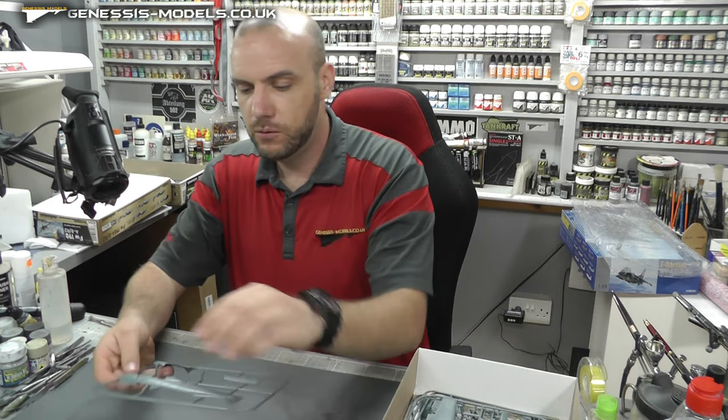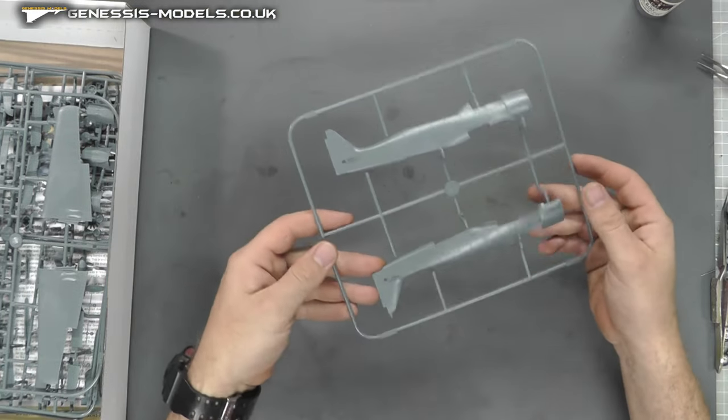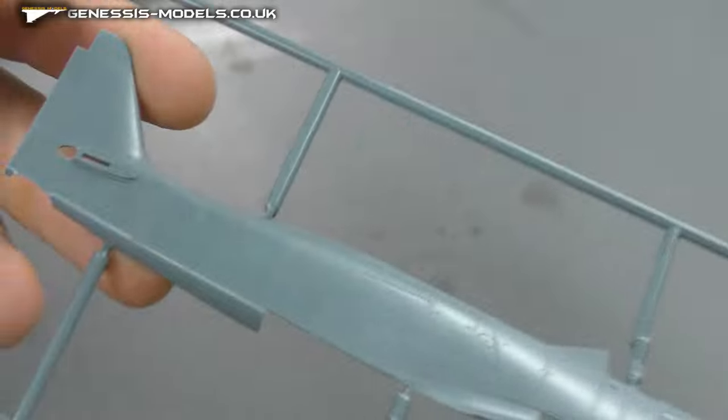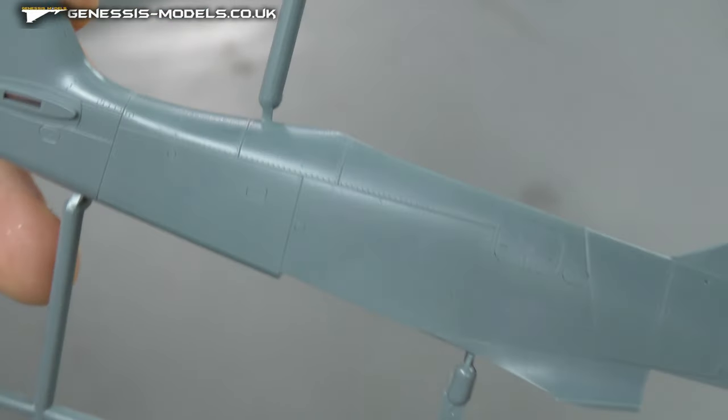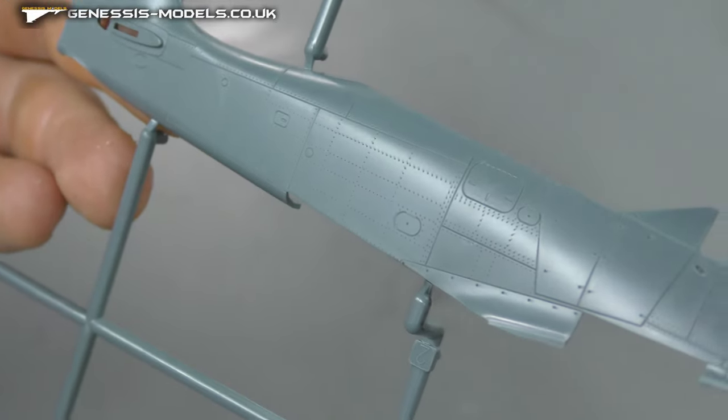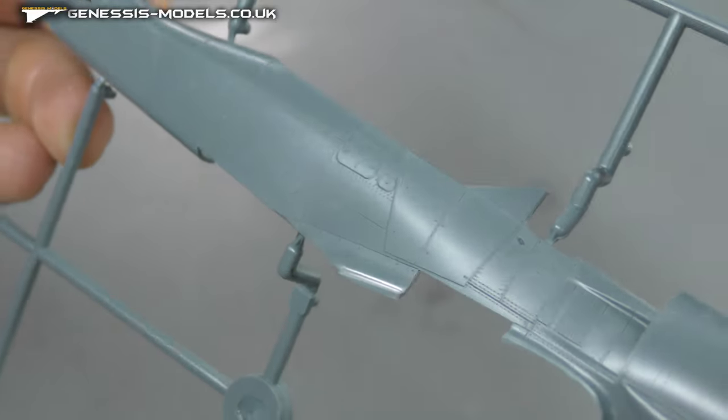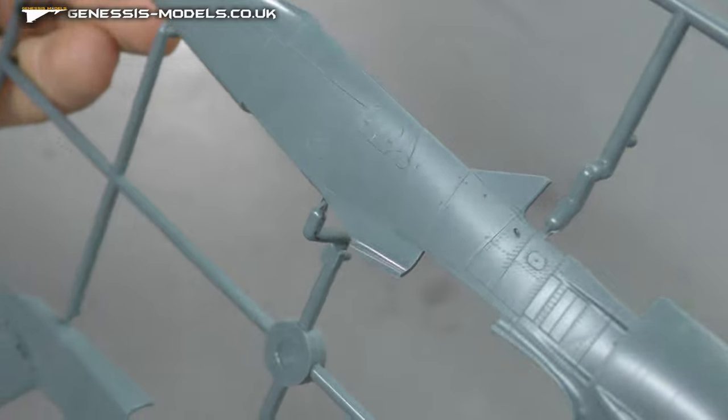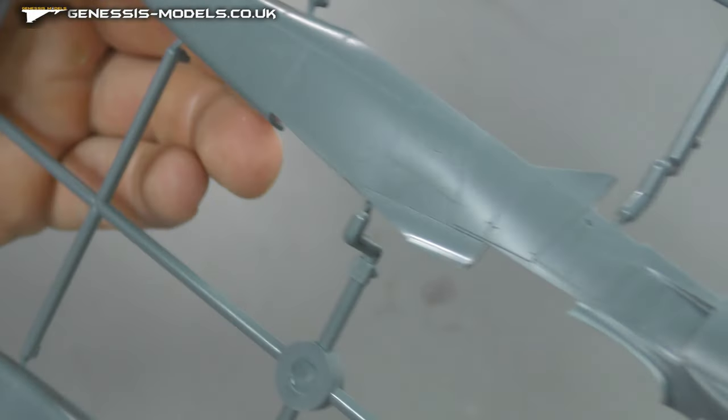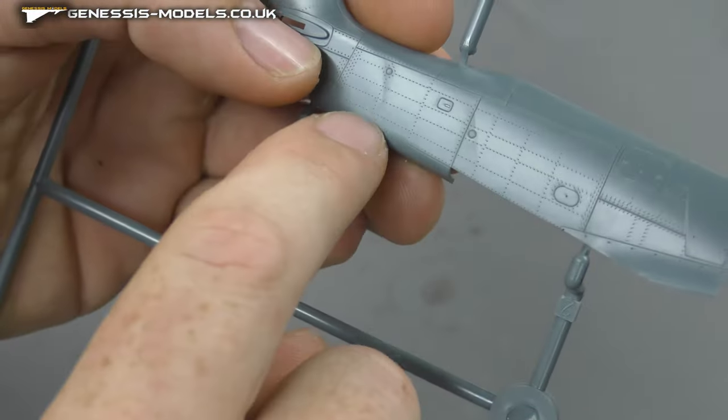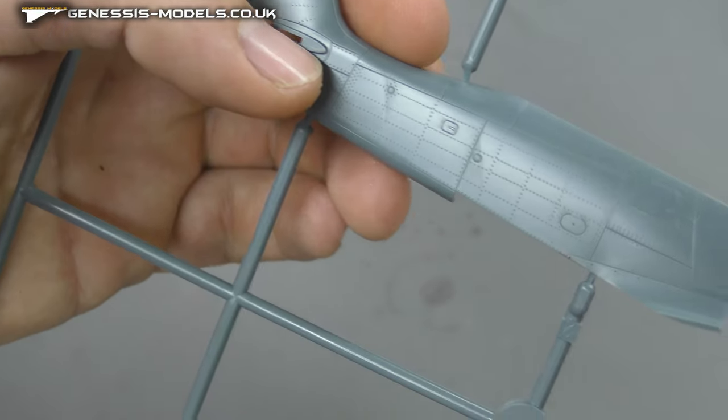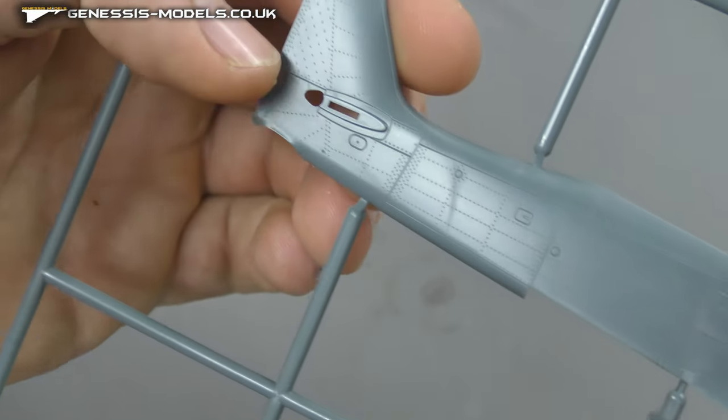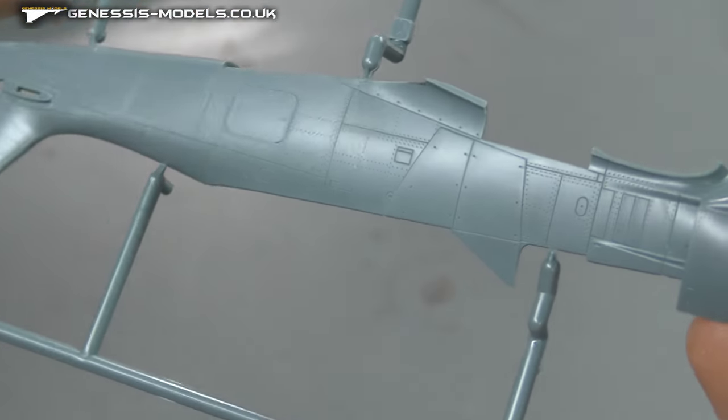Moving along to the fuselage section, this is the beauty of Eduard. Absolutely stunning, gorgeous, very crisp, very consistent recessed panel lines, recessed rivets. We've even got those tiny little rivets that you see in between the panels as well. Absolutely stunning on both sides.